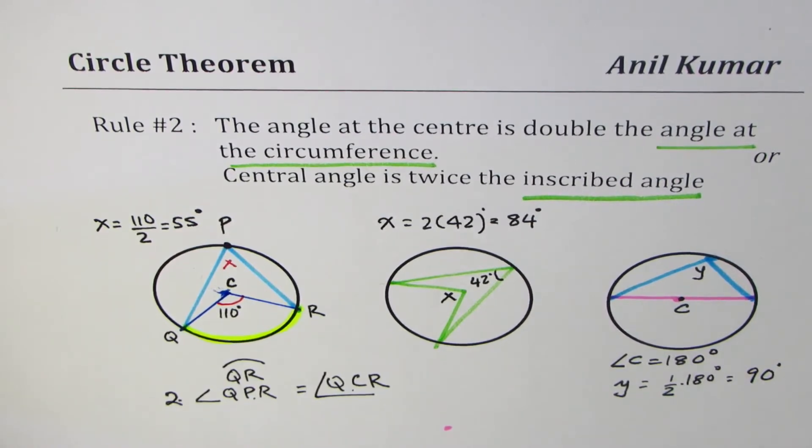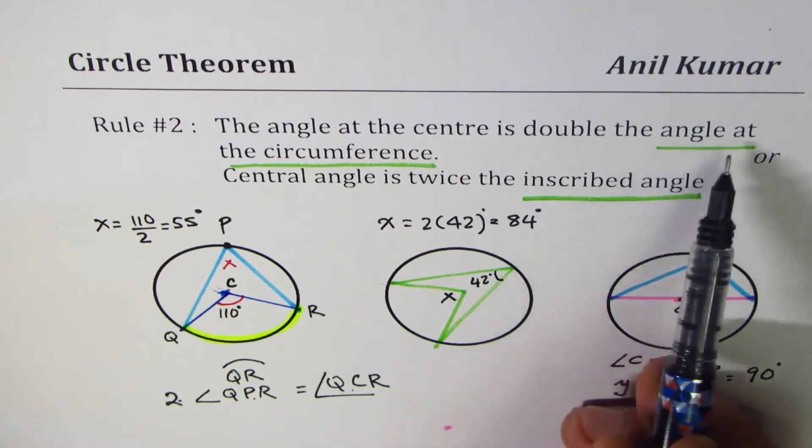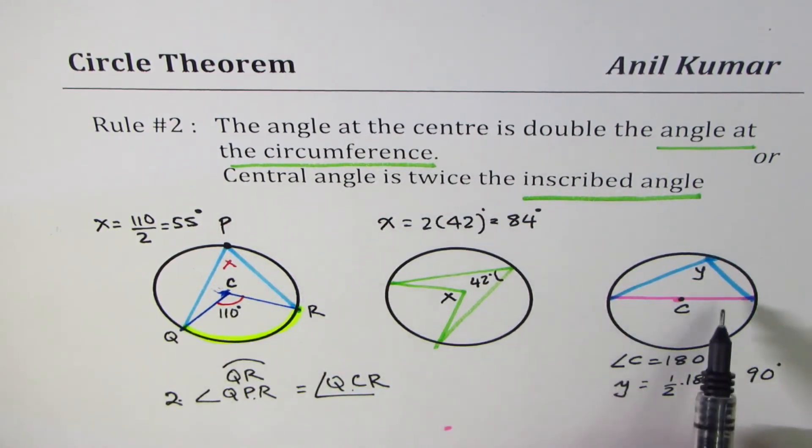You get a very important rule, which we'll call rule number 3, that in a semicircle, a triangle will always have 90 degrees as the inscribed angle or the angle at the circumference, right? Do you see that? Half of 180 is 90.